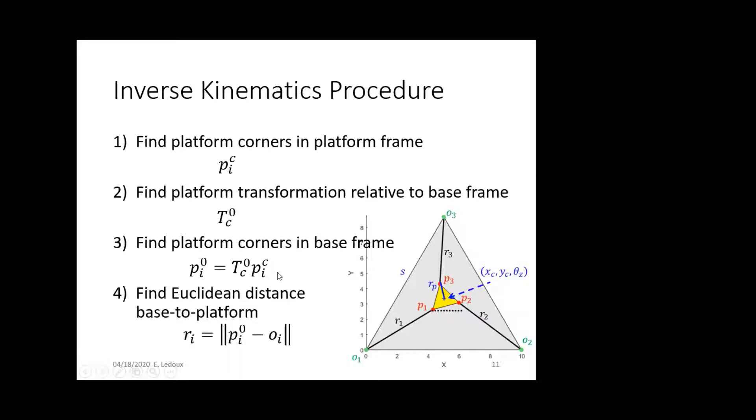Third, find the platform corners in the base frame. So, for that, just multiply the transformation times the point. So, we've got point in the platform frame, multiply by the transformation from the base frame, and then we know where that new point is.